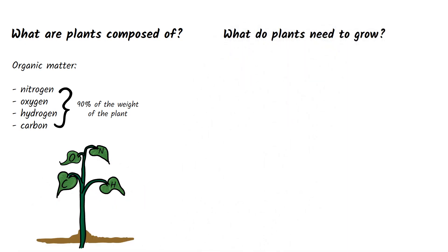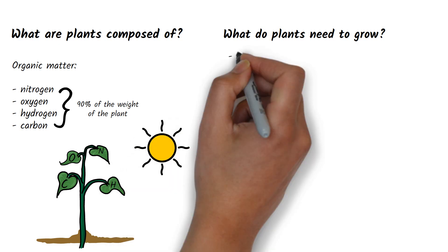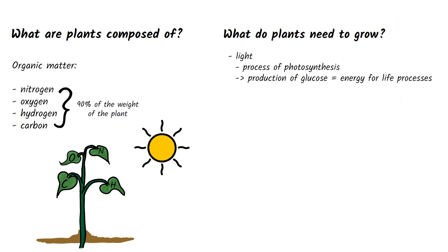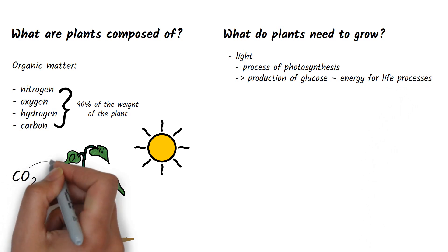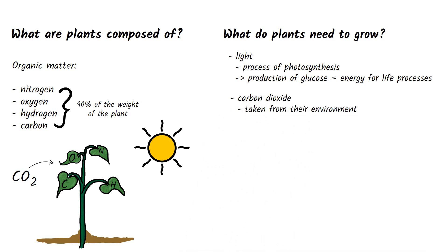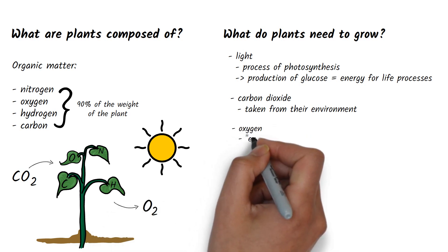In order to grow, plants need the following elements. Light to carry out the process of photosynthesis, which produces glucose and thus provides energy for the plant's life processes. During the process of photosynthesis, plants take carbon dioxide from the environment and return oxygen as a waste product.